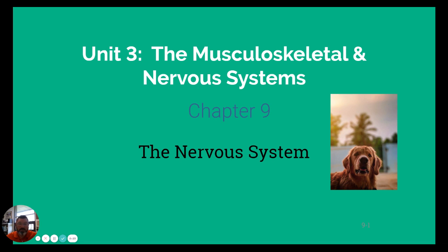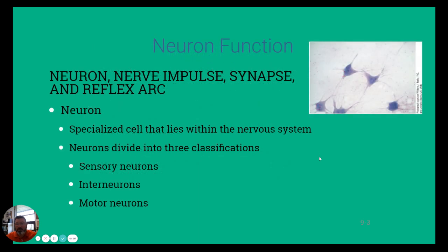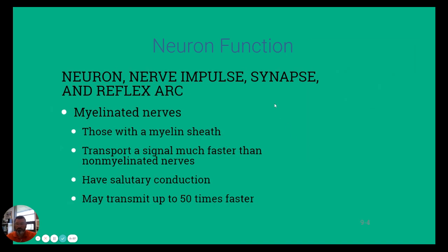That's what we'll focus on here in this second part mini lecture. Let's look at neuron function. I mentioned in the unit two lecture a little bit about what those things do and how they may work. We've got a photo image up here on the right, which shows actual neurons moving through the nervous system. Very specialized cells that lie within the nervous system are the neurons. They divide into three classifications: sensory neurons, interneurons, and motor neurons.